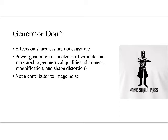Power generation is an electrical variable, so it's unrelated to any geometrical qualities — sharpness, magnification, shape distortion. It controls KVP and MAs, or more accurately, average KVP and effective MAs. It is not a contributor to image noise.